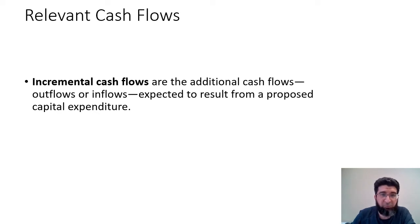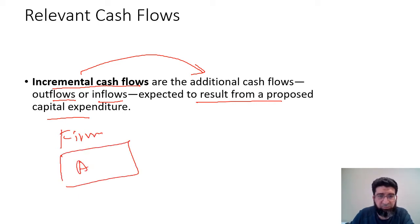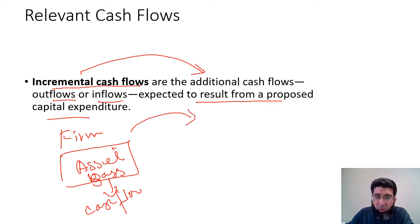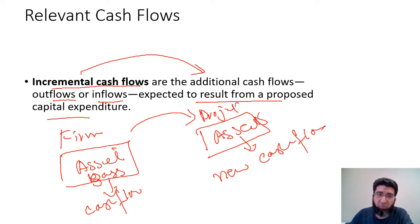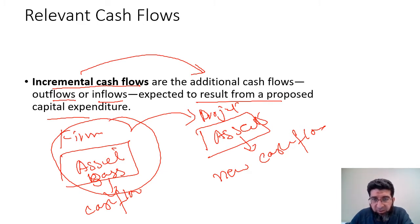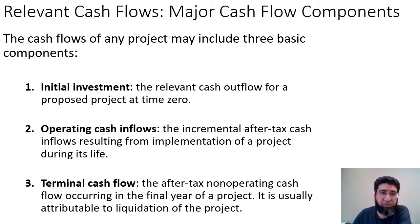The relevant cash flows to a project are called incremental cash flows. They are incremental because these are the additional cash flows — which includes both outflows and inflows — expected to result from a proposed capital expenditure. For a firm, there is an existing asset base creating certain cash flows. By adopting a new project, the new assets will create additional cash flows. To evaluate feasibility, we look only at the project's new or incremental cash flows, not the firm's existing cash flows.